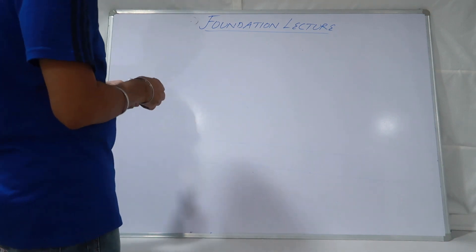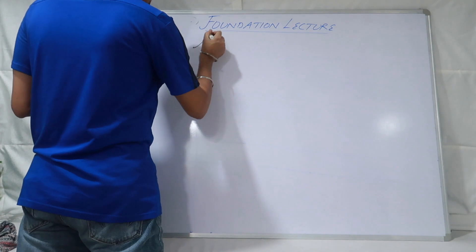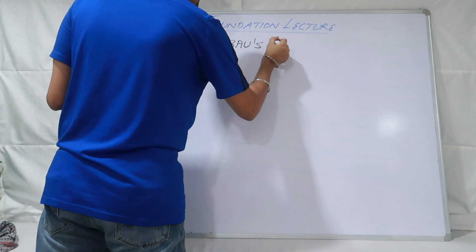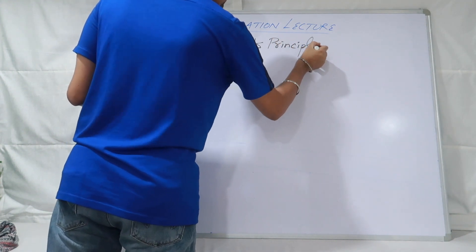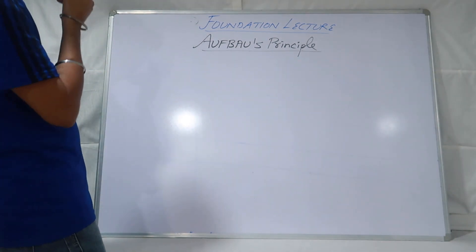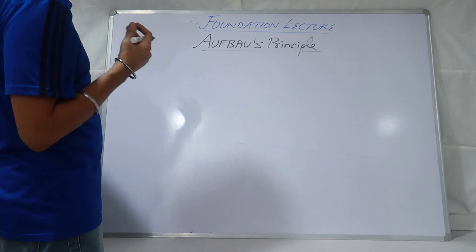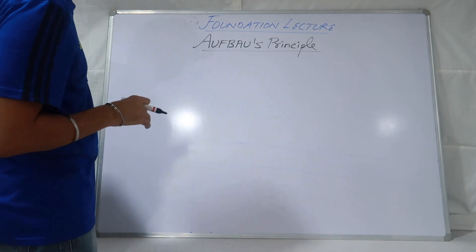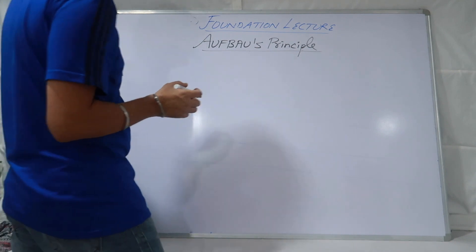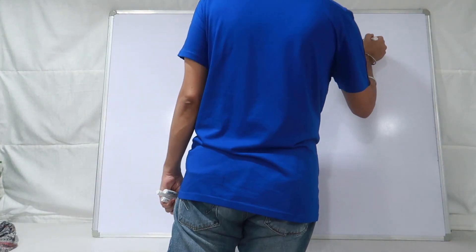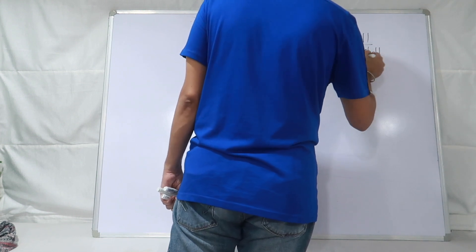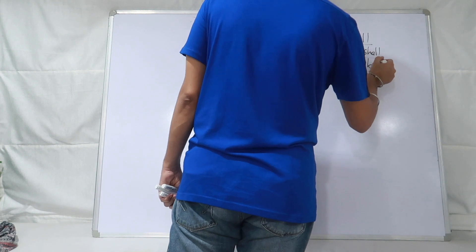Now we come to the very important principle which is called Aufbau principle. Aufbau ka matlab hai 'building up.' This is the principle which will help you in finding out how to write the electronic configuration in the form of shell, sub-shell, and orbital form.